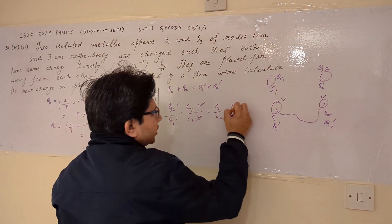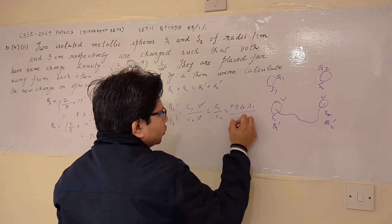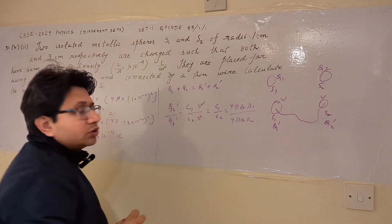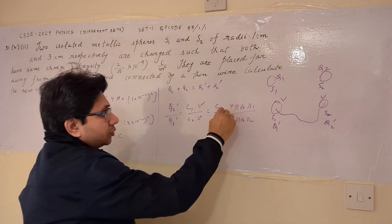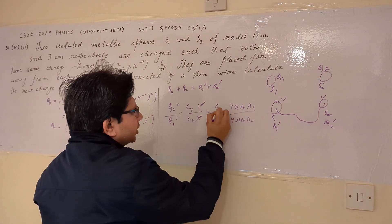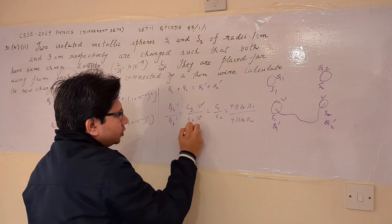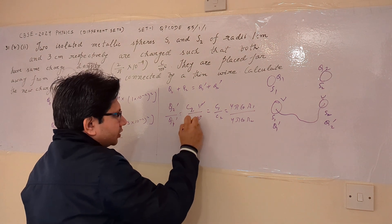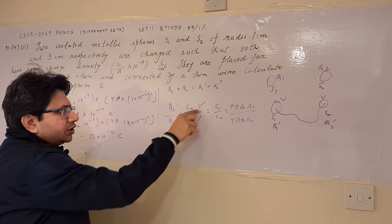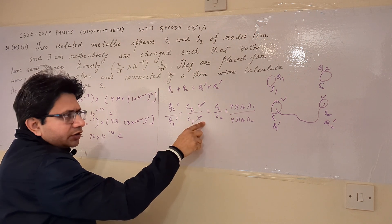Now C1 = 4πε₀R1 and C2 = 4πε₀R2, since the capacitance of a sphere is given by this formula. There is a correction here: Q2' corresponds to C2 × V and Q1' corresponds to C1 × V.